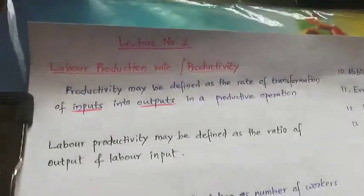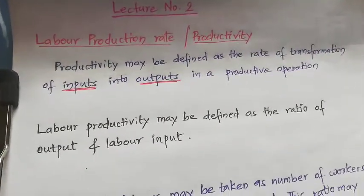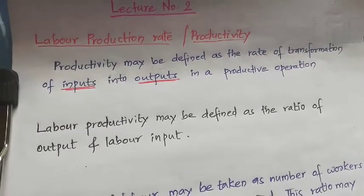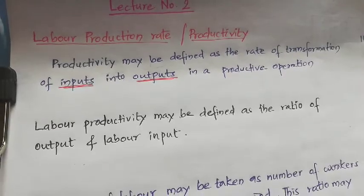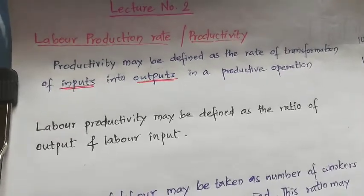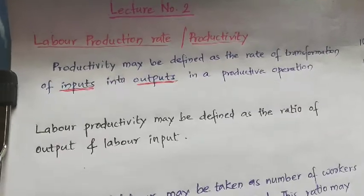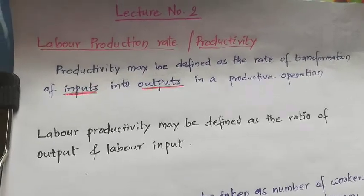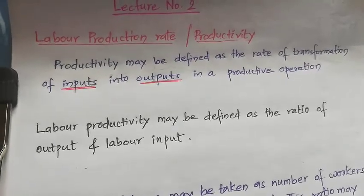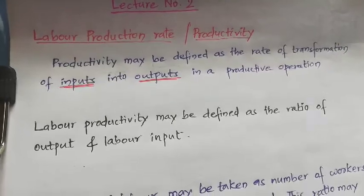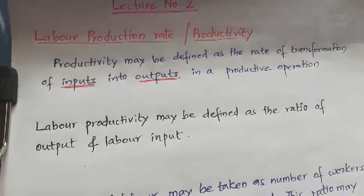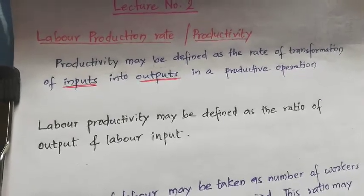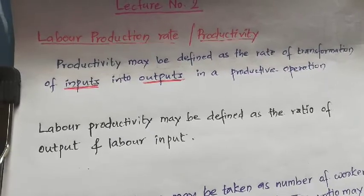Let us check what productivity means. Productivity may be defined as the rate of transformation of inputs into outputs in a particular operation. To produce a product or provide a service, we must have resources in the form of men, machines, materials, money, etc. In broader sense, in construction, productivity means goods and services produced in relation to the resources utilized in producing the same.